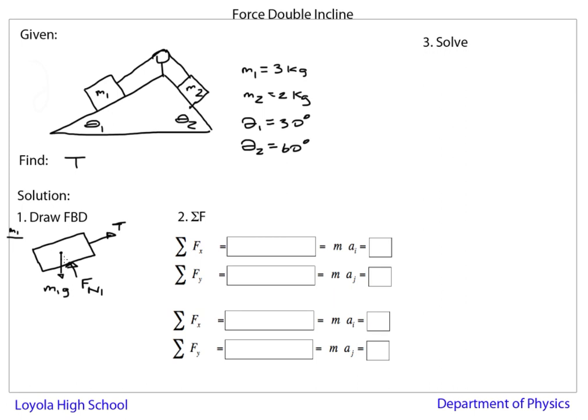We can break this up into sine and cosine in a minute. Over here with the other object, m2, I have T pointing up—the same tension, same magnitude, different direction—Fn2, and then m2 g.